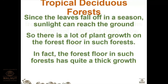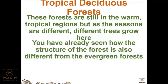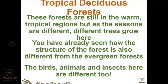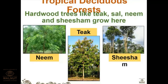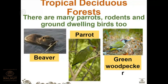The forest floor in deciduous forests has quite thick growth because plants get good sunlight. These forests are in the warm tropical region, but different trees grow here according to the season. Hardwood trees like teak, sal, neem, and sheesham grow here. There is a huge variety of monkeys, deer, and large cats, as well as many parrots, rodents, and ground-dwelling birds.